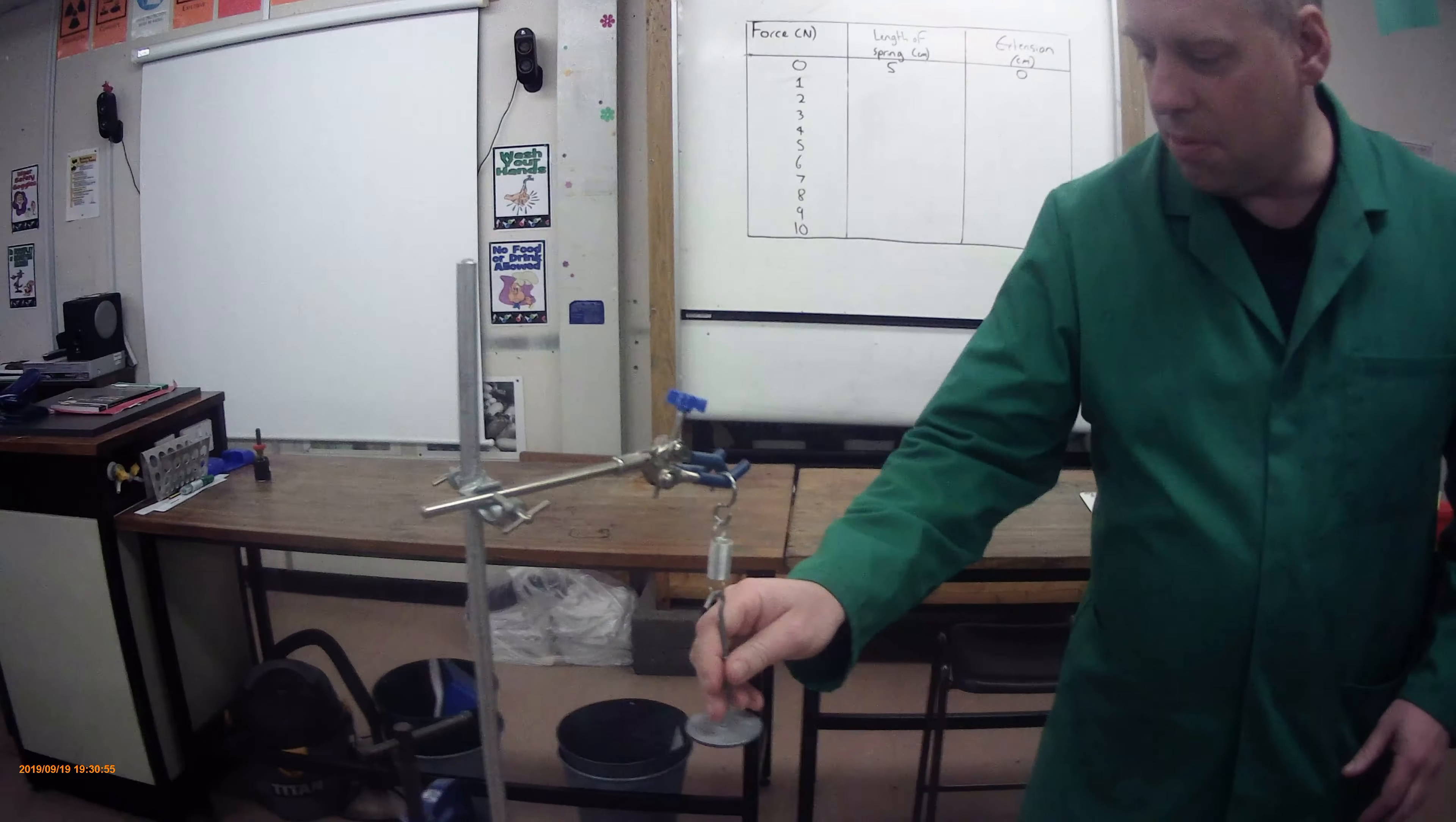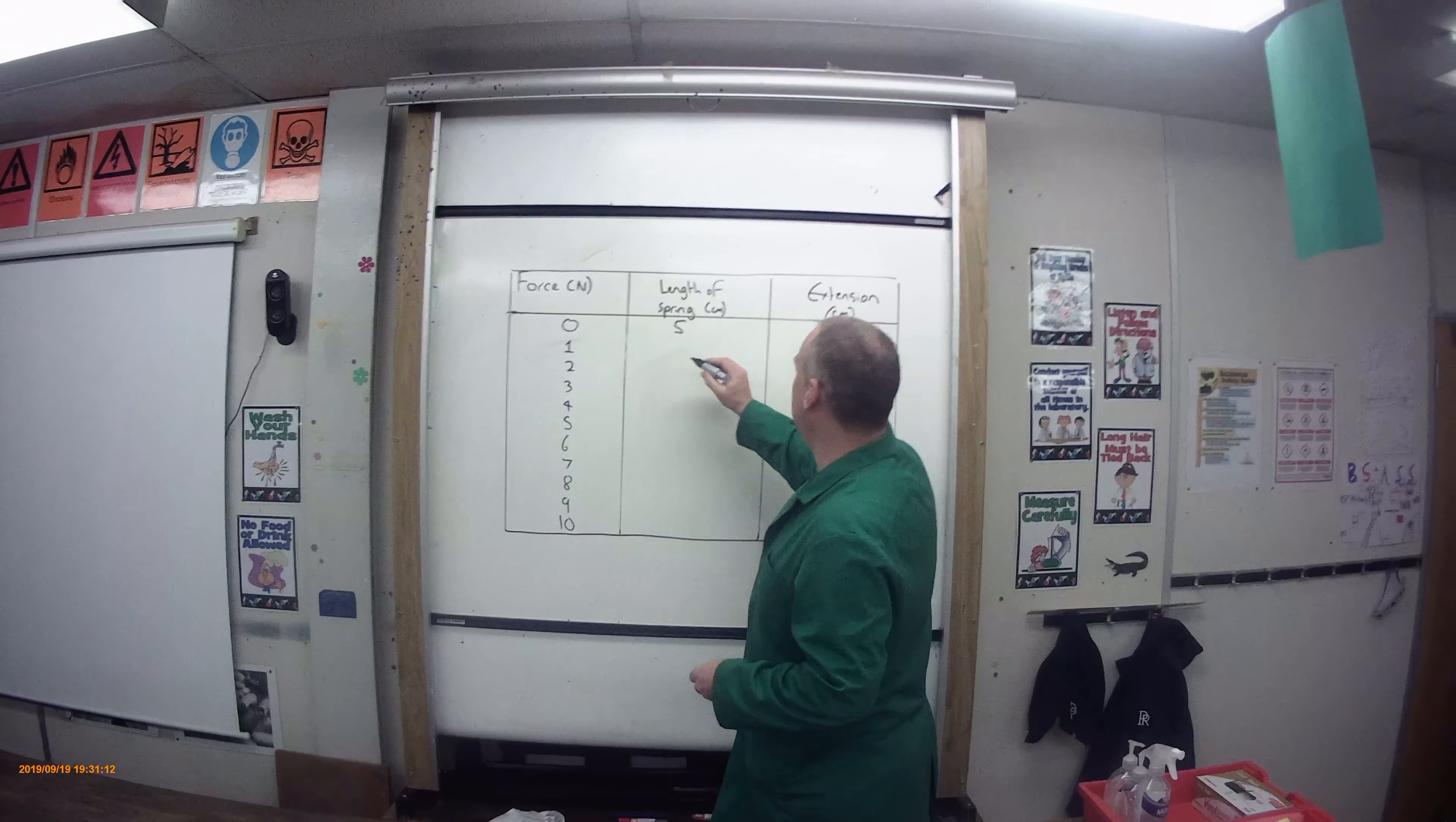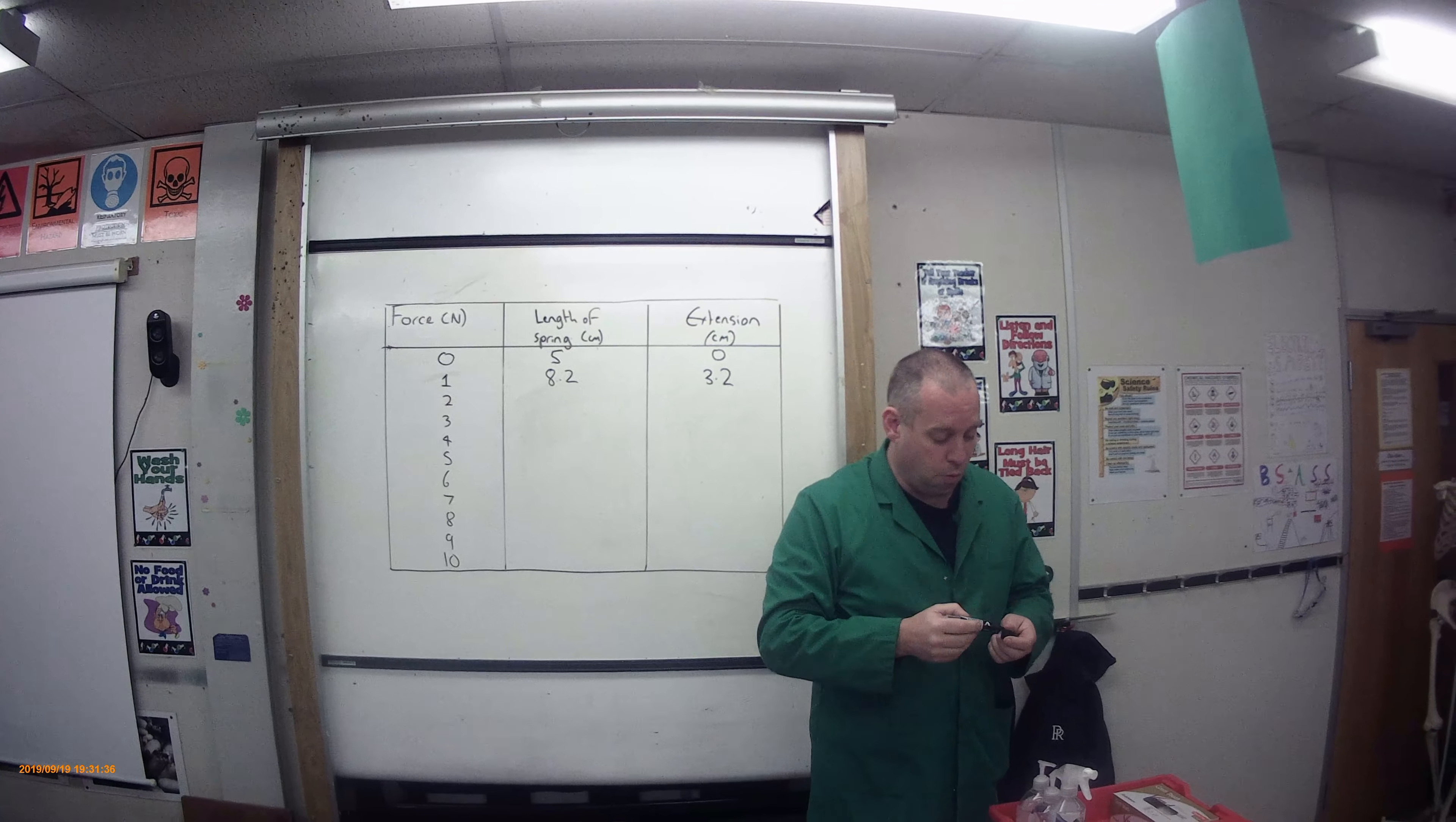So if I put one newton onto my spring, you can see it stretches. I'm going to put my ruler on and measure that. That is 8.2 centimeters. So you can now work out the extension. The extension is going to be the length of the spring with the mass on minus the length of the spring on its own. So 8.2 minus 5 equals an extension of 3.2 centimeters. That is the extension for one newton.